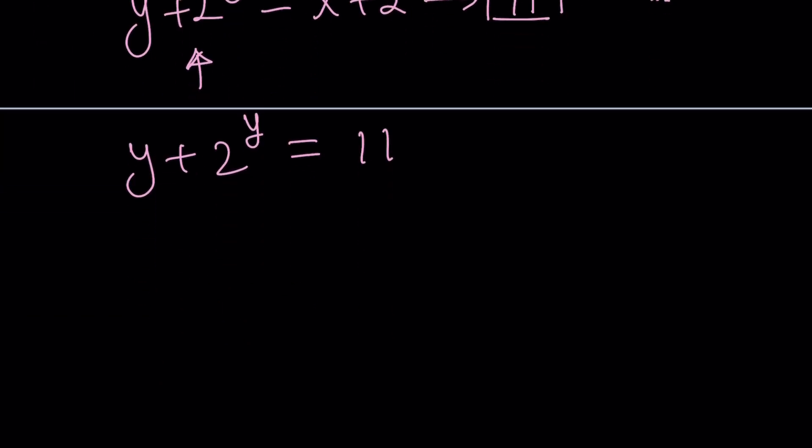From here you can make different assumptions or guesses. Or you can think about it this way: 2^y = 11 - y. This is an increasing function, right? As y increases, 2^y increases.